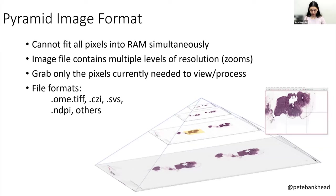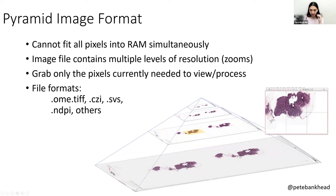The most common way of solving this is called the pyramid image format. This is a way of handling the fact that you cannot possibly fit all of the pixels with all of the data into your RAM simultaneously, no matter how good your computer is. The image file itself contains multiple levels of resolution — different zoom levels. When you first open an image, it shows you just the top layer that is the most zoomed out, and then as you zoom in, it just goes down the pyramid, showing you only the pixels you need to see at that moment.